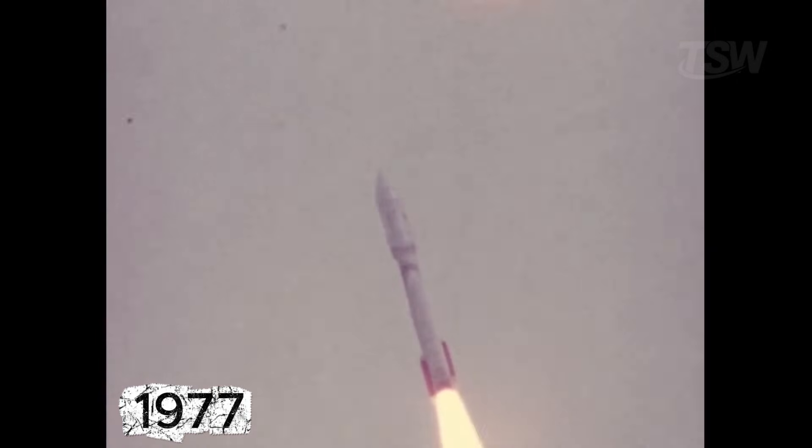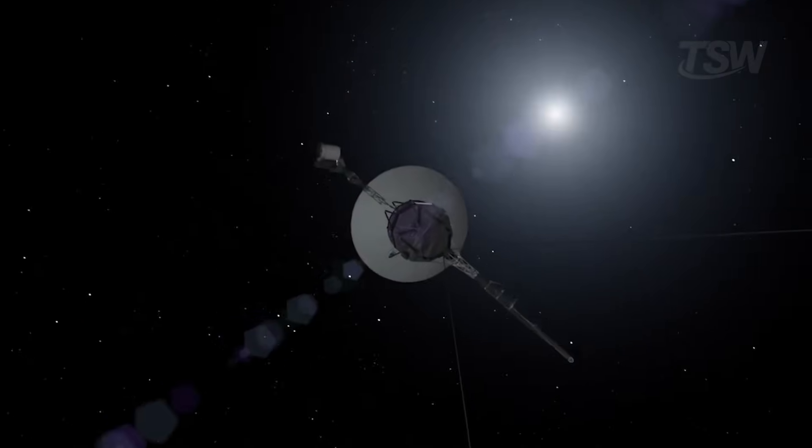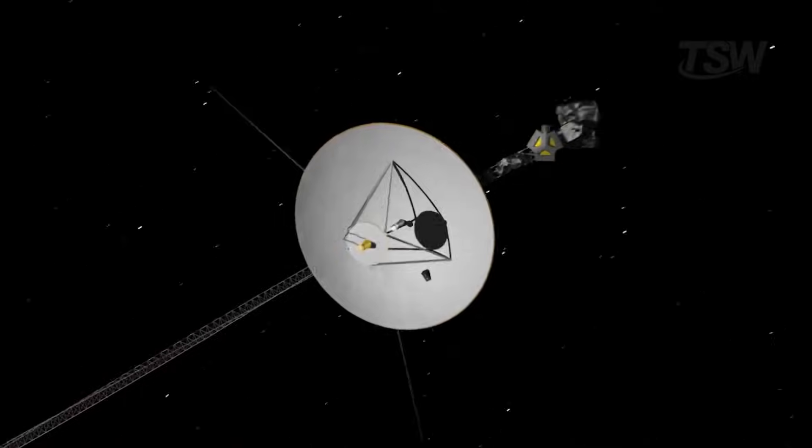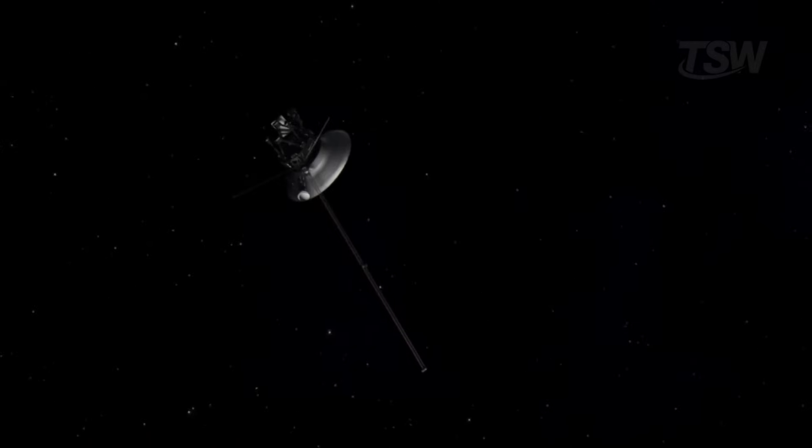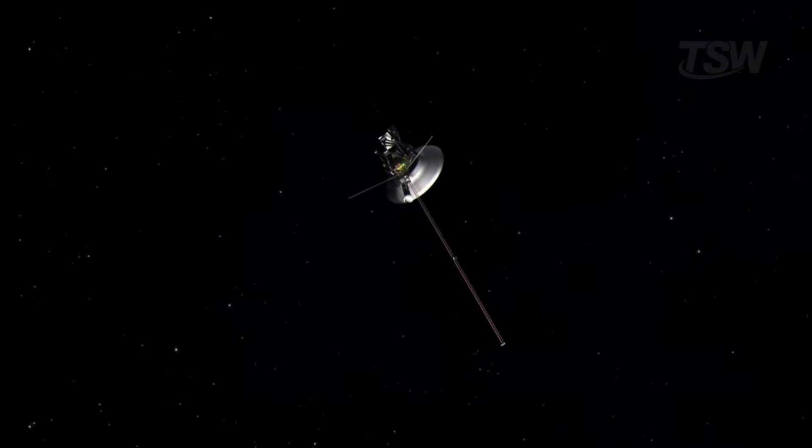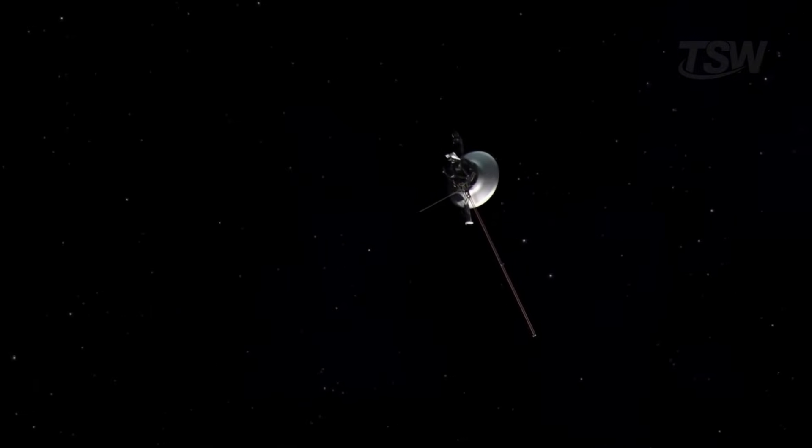Launched in 1977, the veteran probe keeps steadily heading beyond the solar backyard and, around the end of 2026, it will be far enough that light itself will need a full day to cross the void between us and the spacecraft.